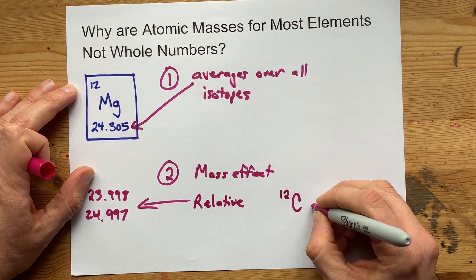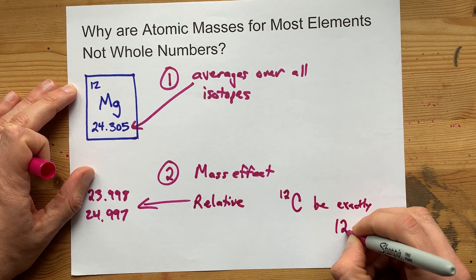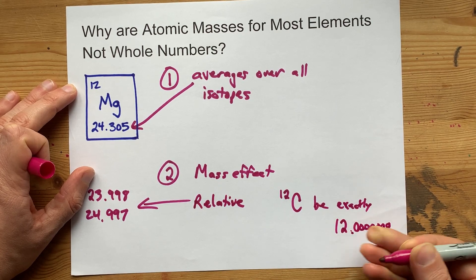We define the isotope carbon-12, six protons, six neutrons, to be exactly 12.000000 repeating at infinity.